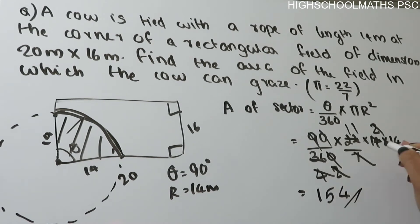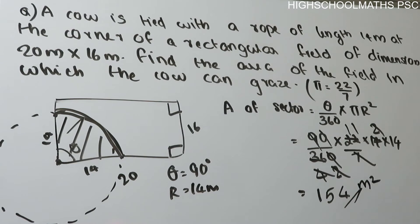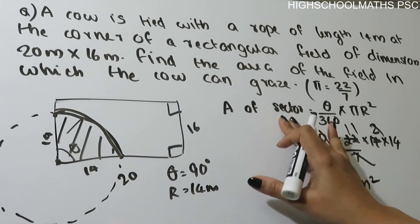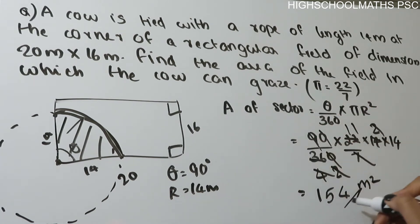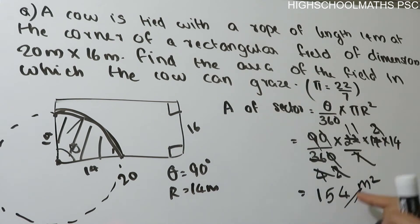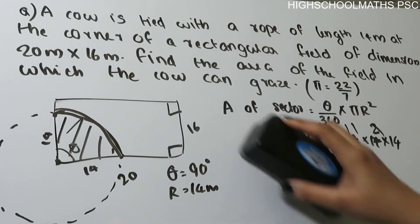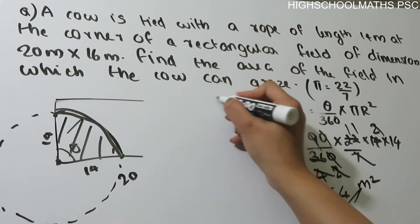We mark here the area of sector using equation theta by 360 into pi r square. We substitute values here and we get that the area of the field in which the cow can graze is equal to 154 meters square.